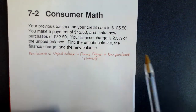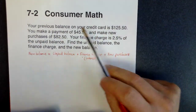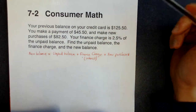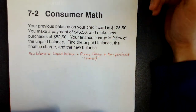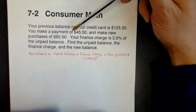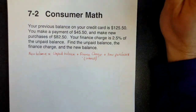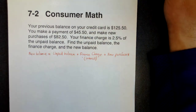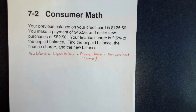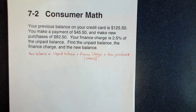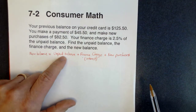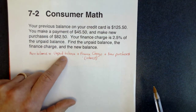Let's do it for this month. Here's our example. We have a previous balance of $125.50. We're going to make a payment of $45.50 and new purchases of $82.50. The finance charge is going to be 2.5% of the unpaid balance. We have to find all three: the unpaid balance, the finance charge, and the new balance. Let's start with the first part of our formula — the unpaid balance.